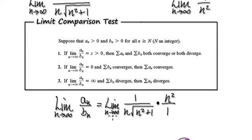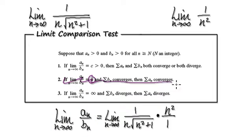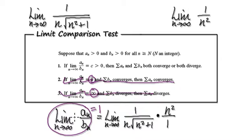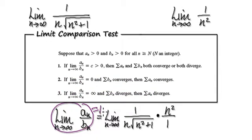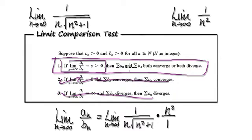We've just computed this value and it equals one. One is not zero, so we can forget about that scenario. One is not infinity, so we can forget about that scenario too. One is bigger than zero, so this is our relevant scenario — we are in the case where both series either converge or both diverge.